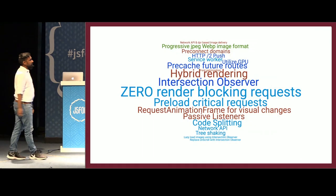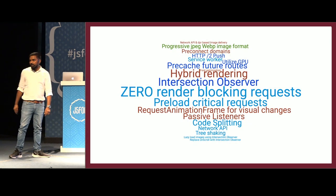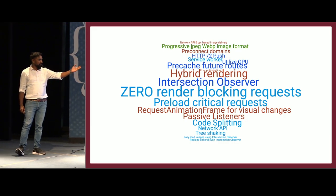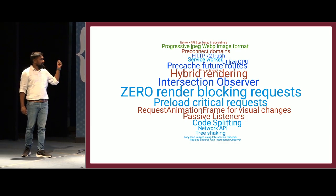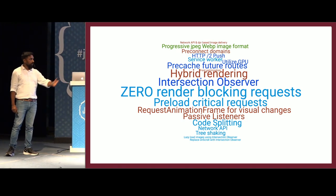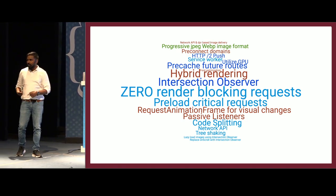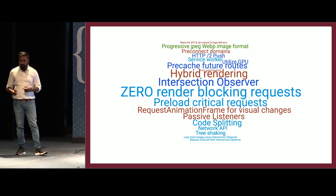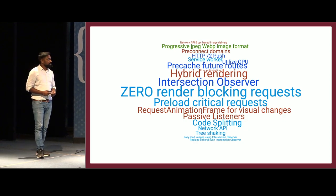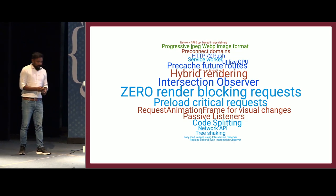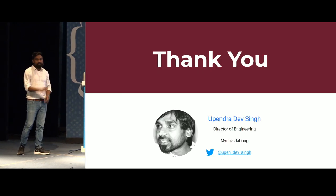In summary, everything we did to achieve those numbers included passive listeners, intersection observer, and the network API — using the network API to serve lower quality images on slow 3G devices so users can still see images and complete their intended actions.